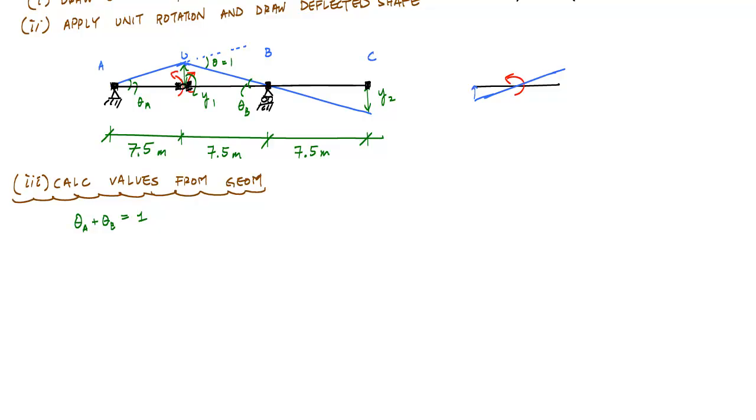And using small angle assumptions, we know that theta A is equal to Y1 over 7.5 meters, and theta B is also Y2 over 7.5 meters. And so if I substitute those into this relationship, Y1 is equal to 3.75 meters.